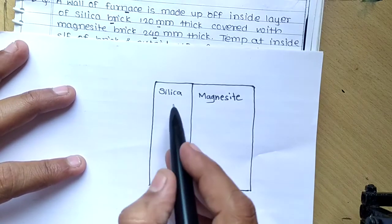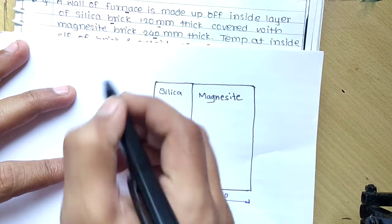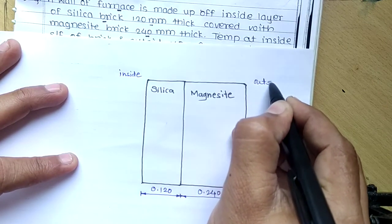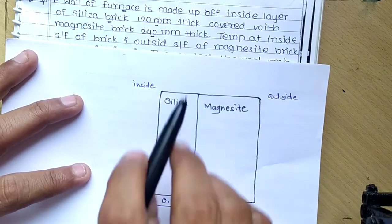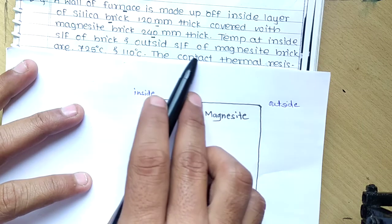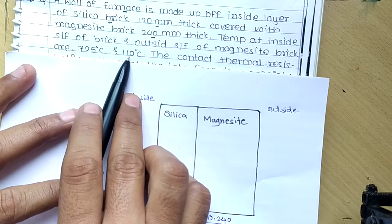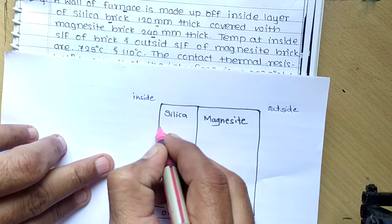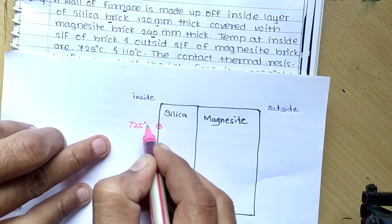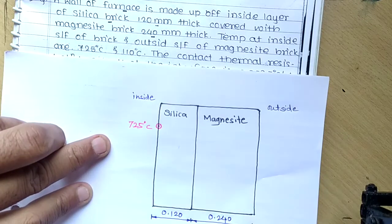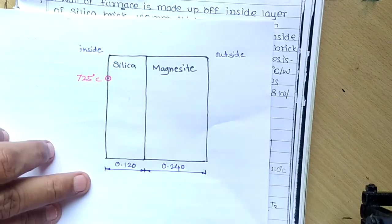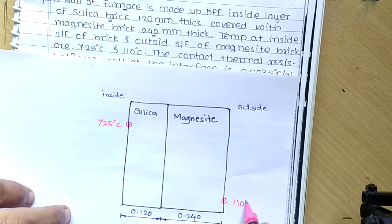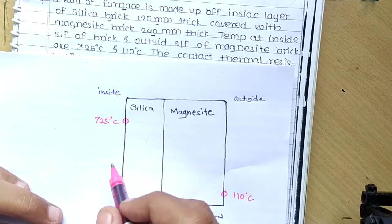According to the given data, silica is on the inner side and magnesite on the outer side. The temperature at the inside surface of the silica brick is 725°C and the outside surface of the magnesite brick is 110°C. So 725°C is on the inner side and 110°C is on the outer side. Note that these are surface temperatures, not air or gas temperatures.